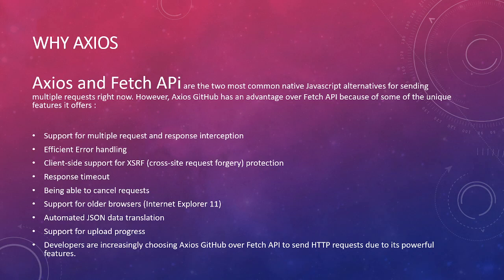Axios also provides effective error handling — better than fetch — and client-side support for cross-site request forgery protection. It gives response timeouts, the ability to cancel requests, support for older browsers including Internet Explorer 11, automated JSON data translation, and support for upload progress. Developers are increasingly choosing Axios over the fetch API to send HTTP requests due to these powerful features.